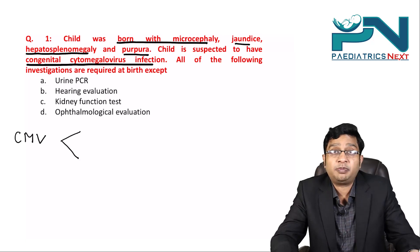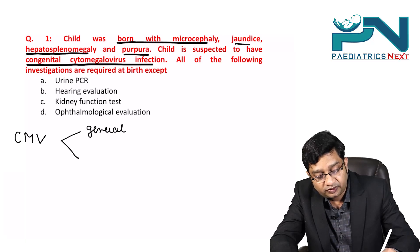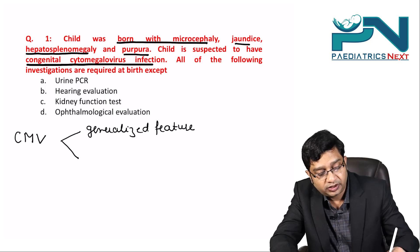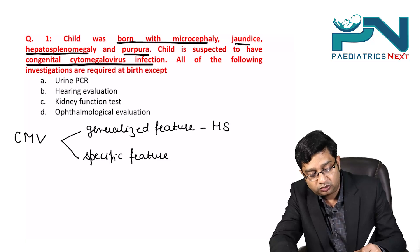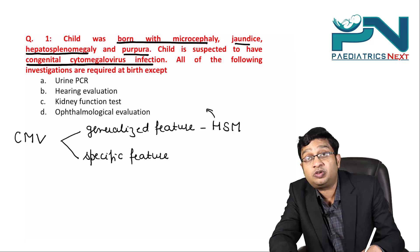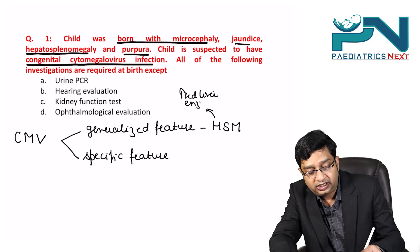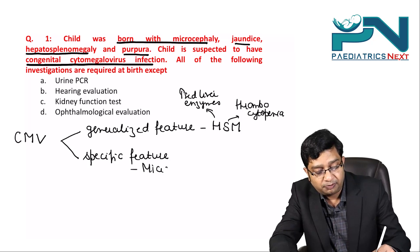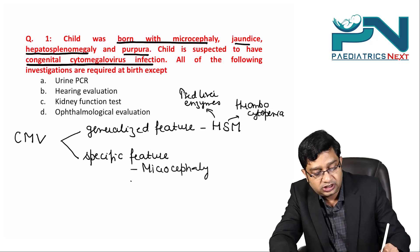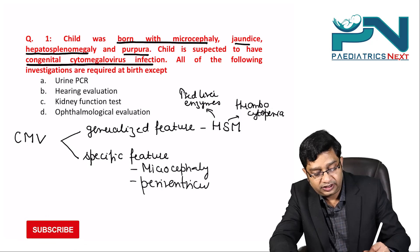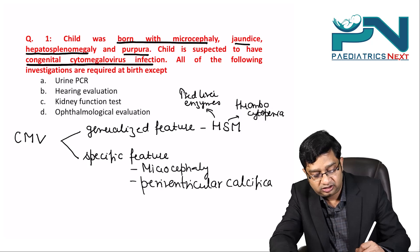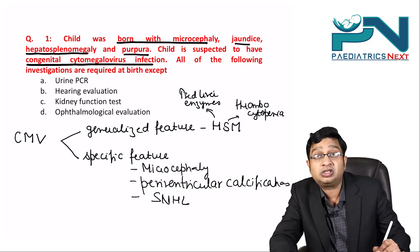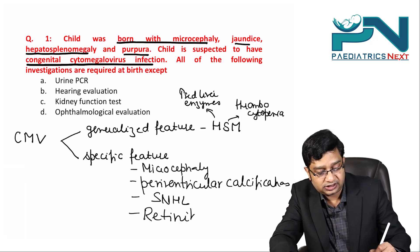In cytomegalovirus infection, there are two types of features. The generalized features — seen in almost every intrauterine infection — include hepatosplenomegaly, which leads to increased liver enzymes, and splenomegaly causing thrombocytopenia. The specific features include microcephaly and periventricular calcification.